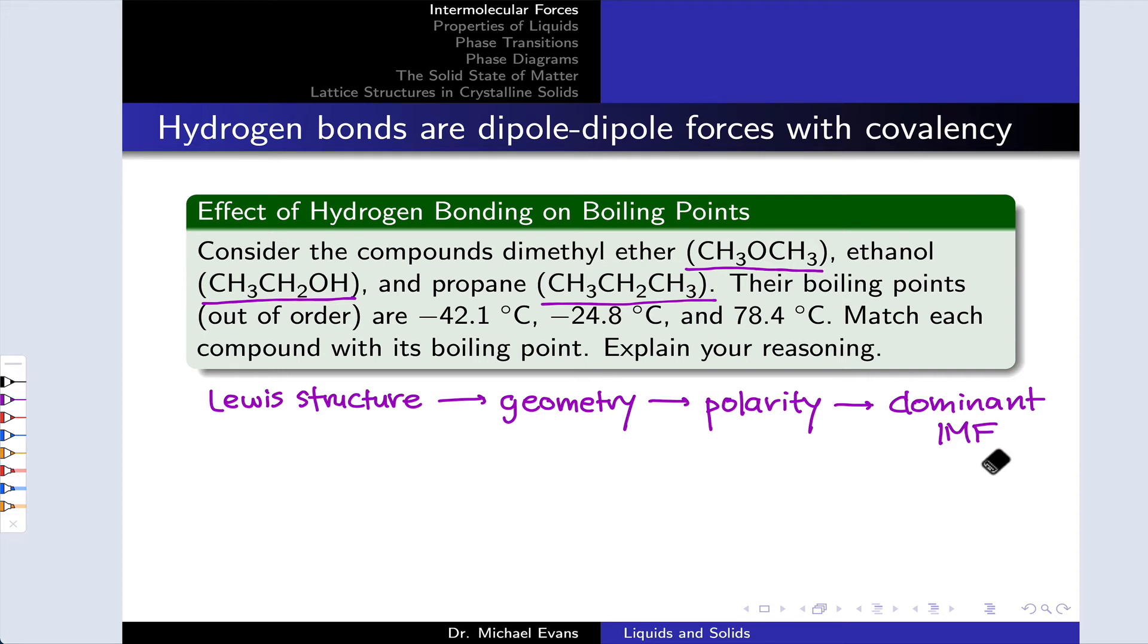Once we've figured out the dominant IMFs and their relative strengths, we can correlate that with the relative boiling points, reasoning that the strongest IMFs will be associated with the highest boiling point. So let's do that for these compounds whose Lewis structures are a little bit more involved. So here's dimethyl ether, two CH3 groups on either side of a central oxygen, kind of reminiscent of water in a way. Here is methanol, CH3, connected to an O, connected to an H. And actually, I drew out methanol. This should be ethanol. I will fix that up a little later, but the argument's going to apply equally well to methanol or ethanol. And then finally, we have propane, which just has three carbons in a row with hydrogens linked to the carbons, like you see here.